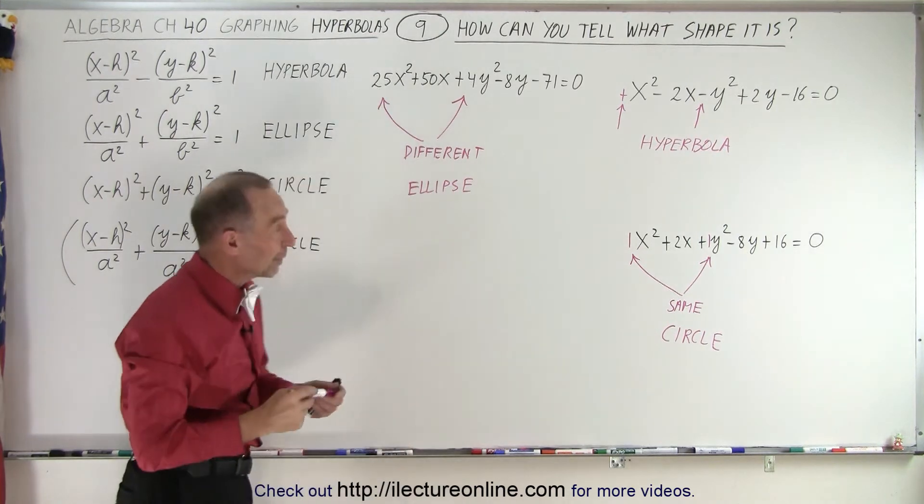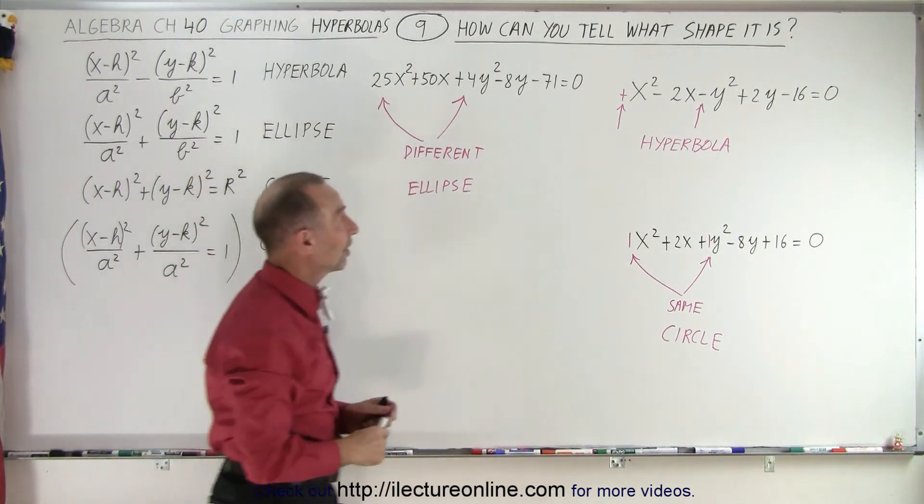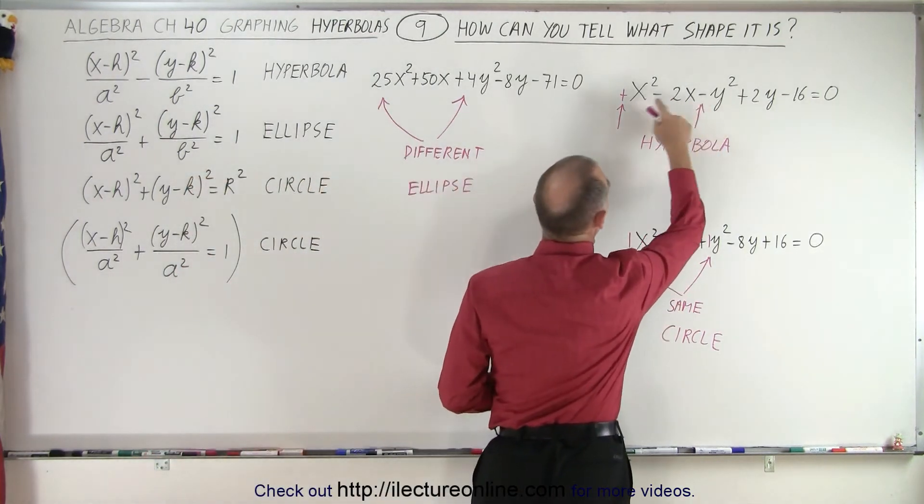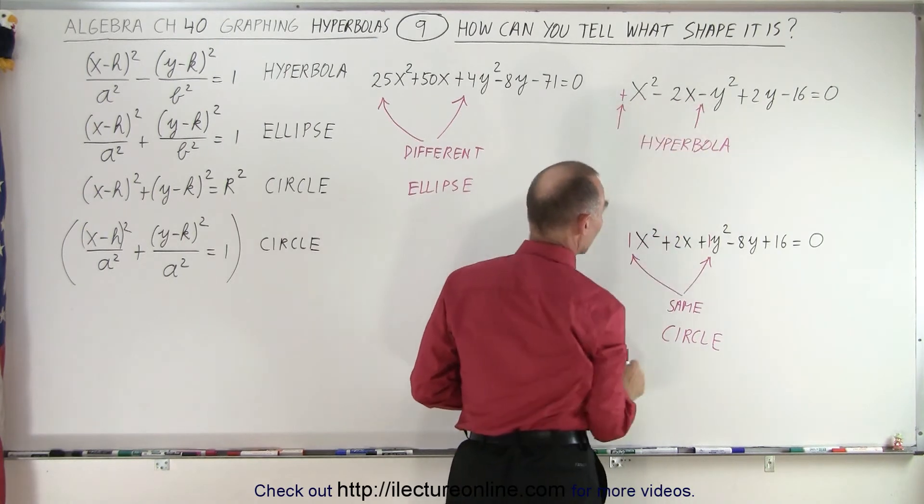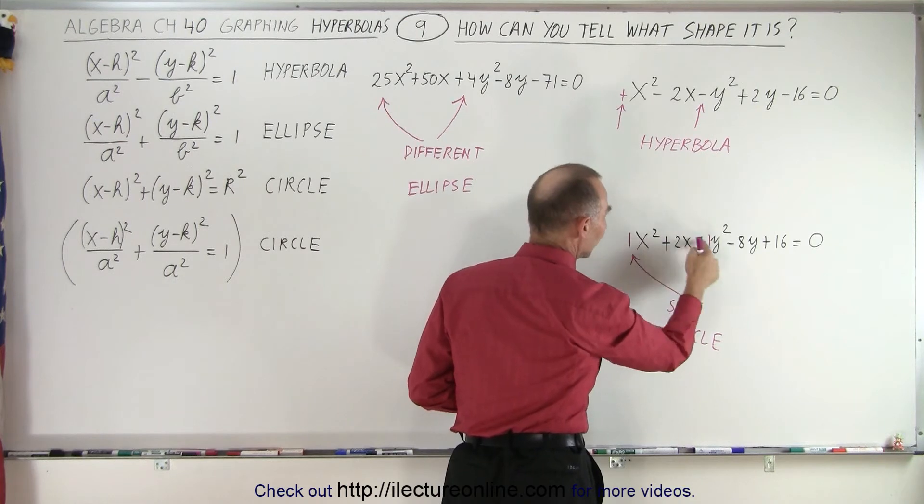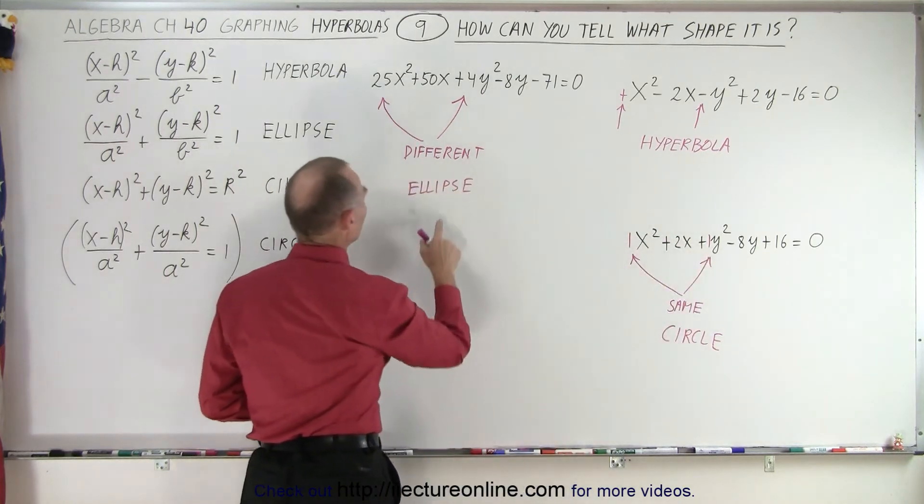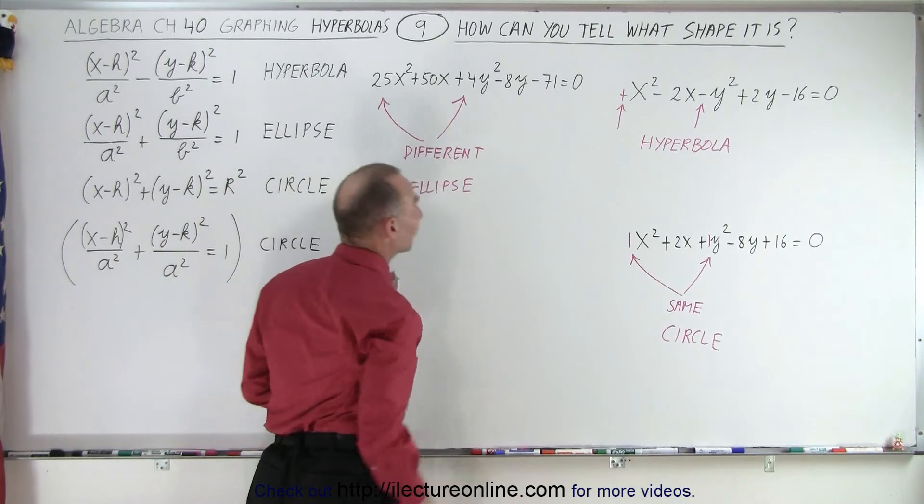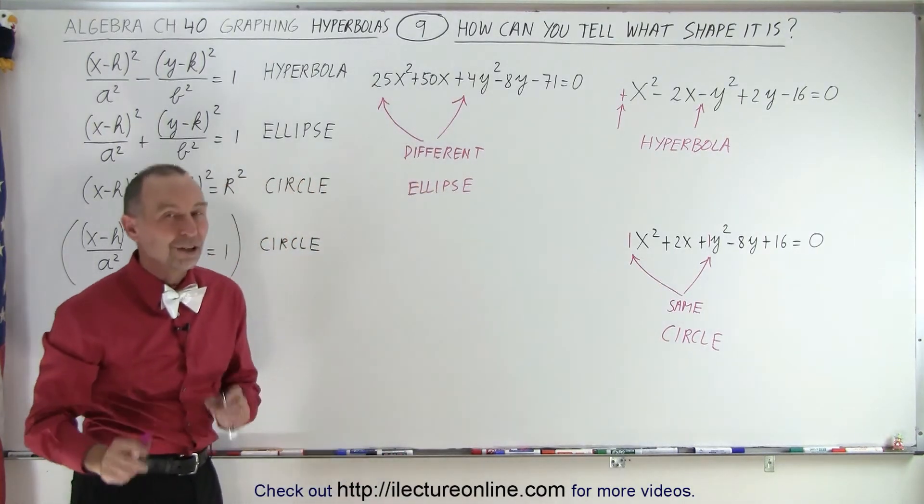And that's how you can tell the difference between these equations. We know it's a hyperbola if one of those two is negative and the other one is positive. We know that we're dealing with a circle if they're both positive and they both have the same number in front. Here we know we're dealing with an ellipse if they're both positive, but the numbers in front of the x-square and y-square term are different.